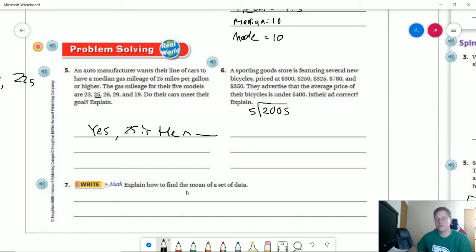Number 6, which actually relates to number 7. So they advertise the average price. If we are talking the average price, what we probably should be using is the mean. And so if I add all five of these numbers together, I'm going to get 2,005. If I divide by five, which is the number of data points I have, I am going to get my average. But my average for this is actually going to be 401. So technically, the ad is not correct because if we use the mean to find the average, then we are going to end up just over.